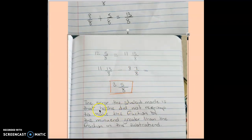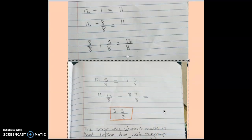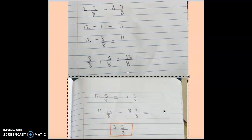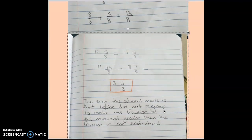The error the student made is that he or she did not regroup to make the fraction in the minuend greater than the fraction in the subtrahend. Make certain you are always regrouping when necessary to avoid this common mistake.